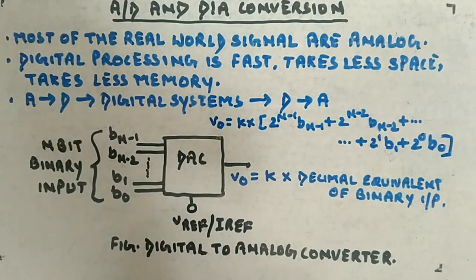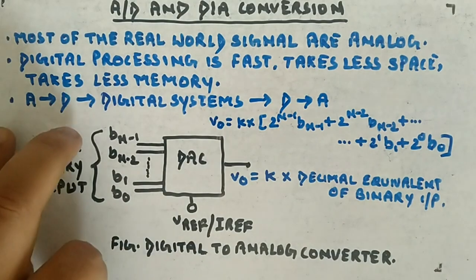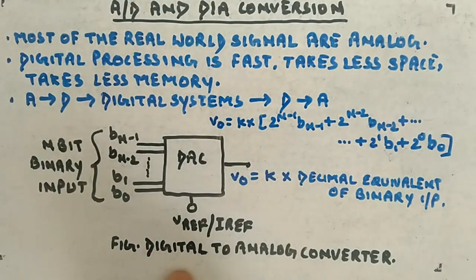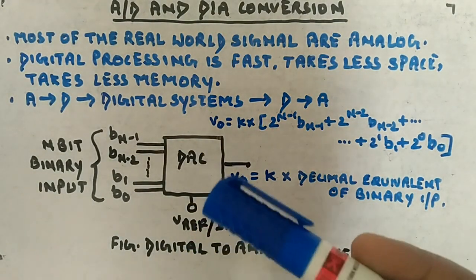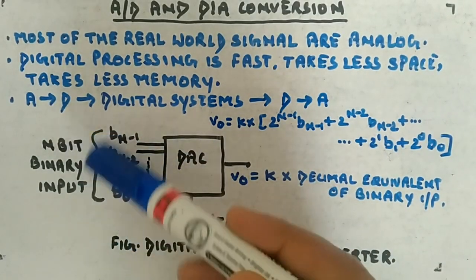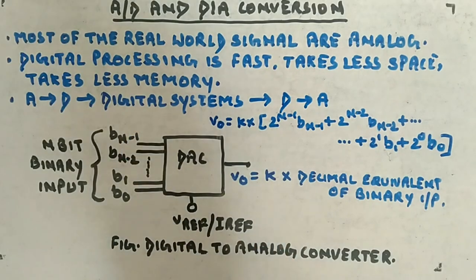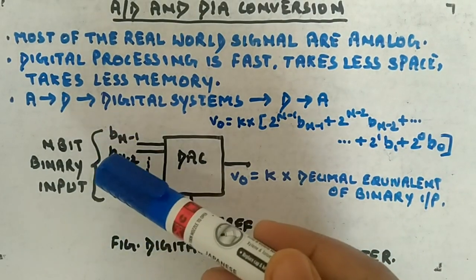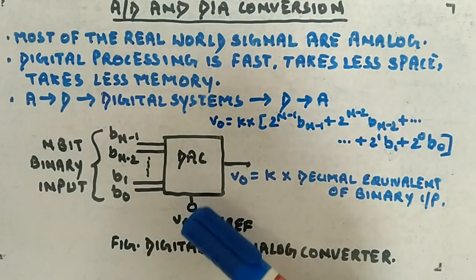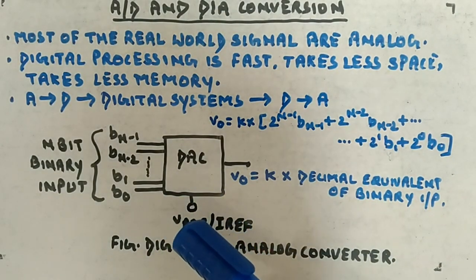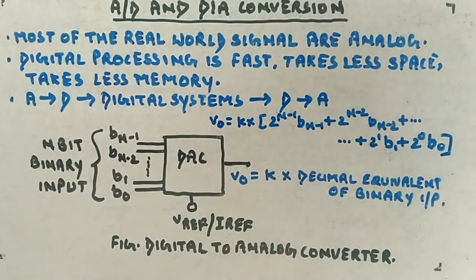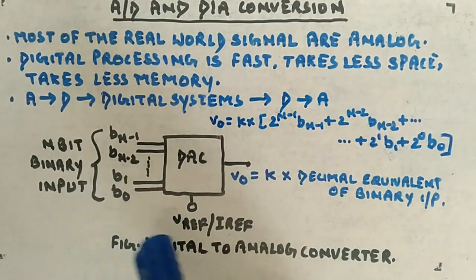This is the flow we usually follow, and that's why we're learning about this. We'll start with D2A — digital to analog conversion. The format of a digital to analog converter is: you have an n-bit input, starting from bit zero up to bit n minus one, a reference voltage or current used for conversion, and using these two you form the analog output.